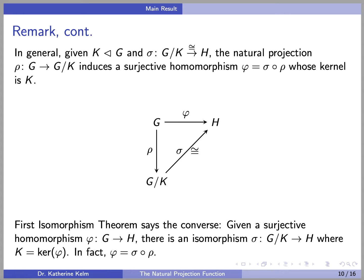Just a note that the first isomorphism theorem says the converse of this remark. Recall that it says that given a surjective homomorphism phi from G to H, there is an isomorphism sigma from G mod K to H, where K is the kernel of phi. And in fact, phi will equal sigma of rho, where rho is the natural projection function.